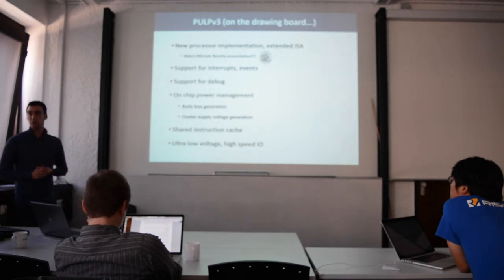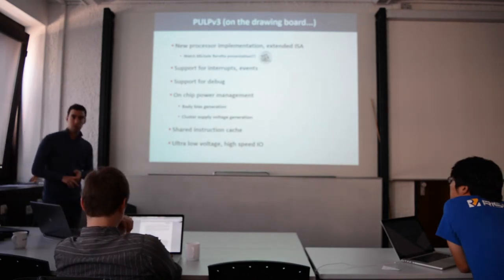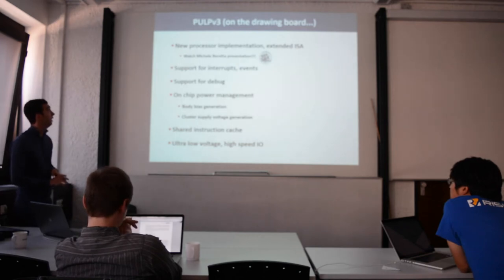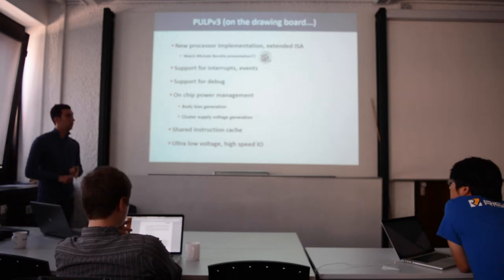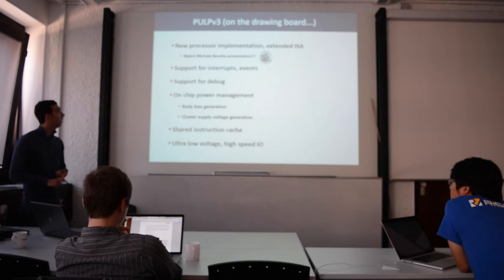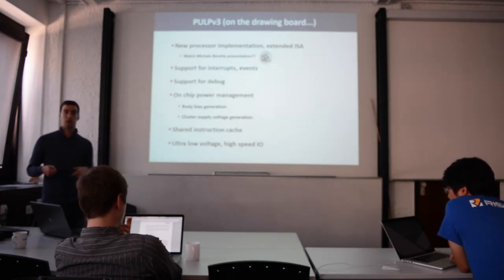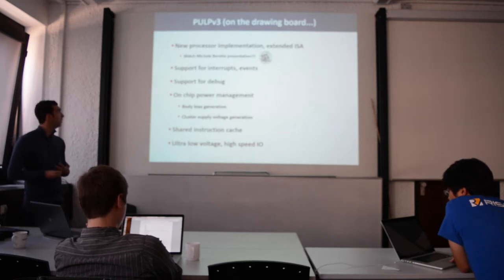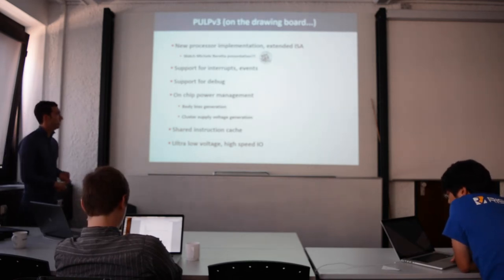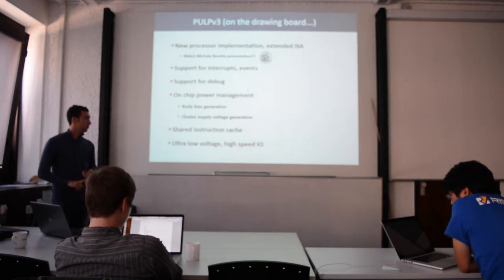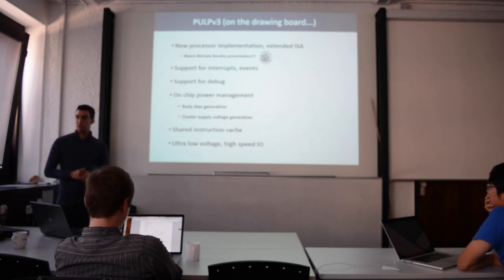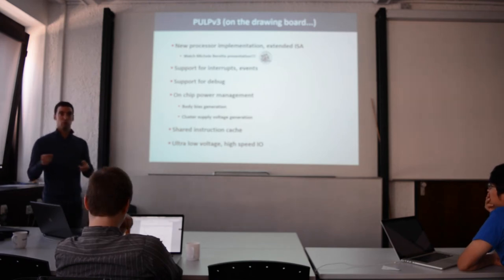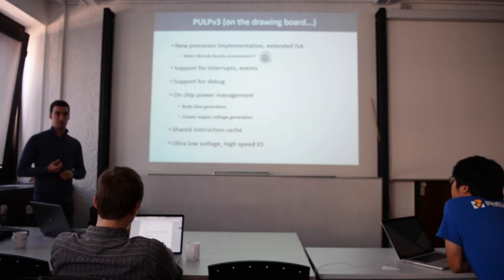In PULP V3, which is on the drawing board with an expected tape-out in the middle of next year, we plan to integrate the new processor implementation from Politecnico di Milano. We have added support for interrupt and events to handle core shutdown during DMA transfers for sequential regions of OpenMP programs. Support for on-chip debug, on-chip power management — including body bias generation and cluster supply voltage generation — shared instruction caches, and ultra-low-voltage high-speed IOs to enable chip-to-chip communication in a fast and energy-efficient manner.